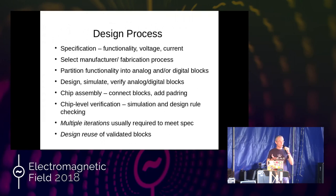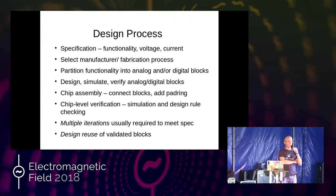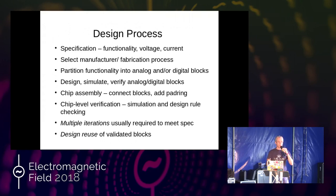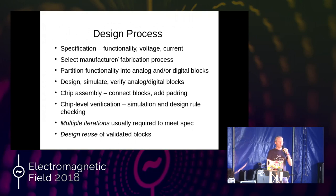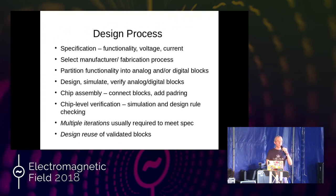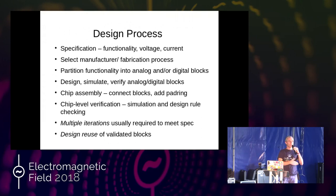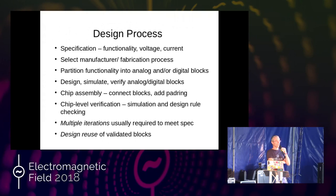To design a chip, you start with a specification defining what the chip should do, the power budget, pinout, and so on, which leads you to a particular fabrication process. You partition the design into manageable analog and digital blocks, then carry out design with a lot of simulation and verification. Unlike a circuit board where you can rework with a craft knife and soldering iron, or code you can recompile, you cannot fix bugs in a chip after fabrication. So you spend a lot of time on analog, digital, and mixed-signal simulation, design rule checking, and layout versus schematic checking. In practice you often go through multiple iterations.